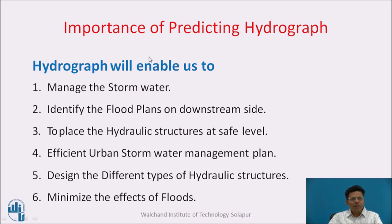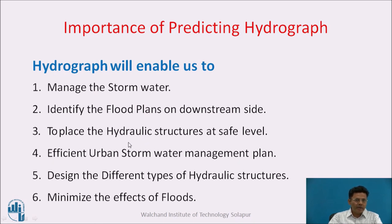The importance of predicting hydrographs: hydrographs enable us to manage stormwater, identify flood plains on the downstream side, and place hydraulic structures at safer levels. Efficient urban stormwater management plans can be defined by knowing the hydrographs. They help design different types of hydraulic structures and minimize the effects of floods, because by knowing the hydrographs one can plan mitigation measures.